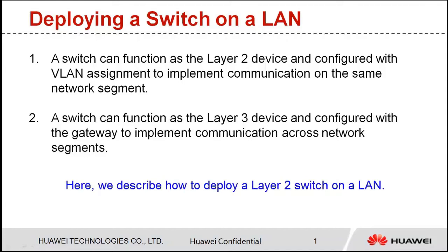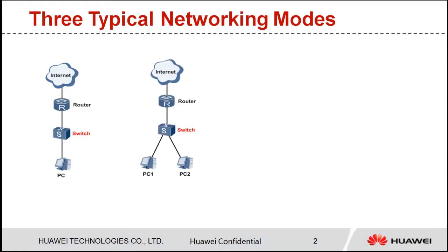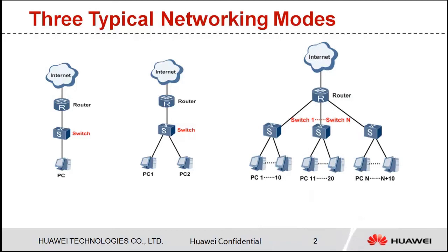First, let's see three typical networking modes of a switch on a LAN. The first networking is the simplest one: one PC connects to one switch and connects to the external network through a router. In the second networking, two PCs connect to one switch and connect to the external network through a router. Multiple PCs can connect to one switch as well. In the third networking, multiple PCs connect to multiple switches and connect to the external network through a router.